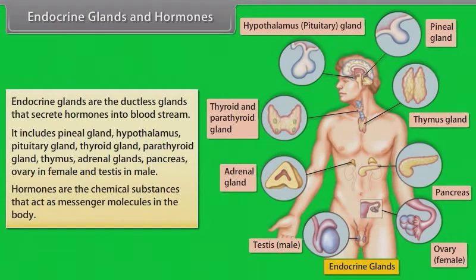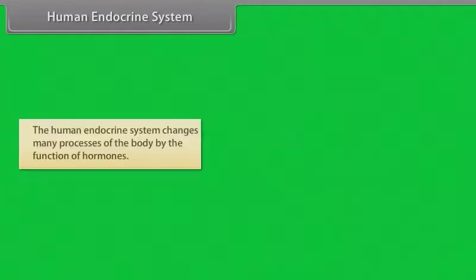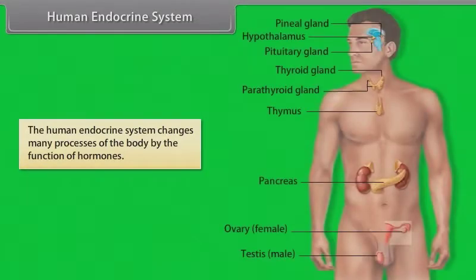Hormones are the chemical substances that act as messenger molecules in the body. The human endocrine system changes many processes of the body through the function of hormones.